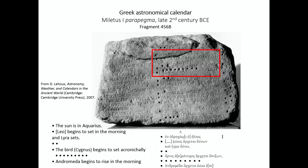The text surrounded in red is what you have in transcription in Greek here at the bottom, and the English translation here. In this day, the sun enters the sign of Aquarius. The next day, Leo begins to set in the morning and Lyra sets. Then you have two days where nothing happens — they're still indicated on the stone so that you can move your peg and not lose track. The next one, the bird Cygnus, begins to set chronically. And then you have a whole string of days where nothing happens. In this way, all the days of the year are there, even if they don't all have any information associated with them.